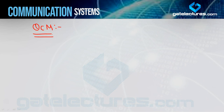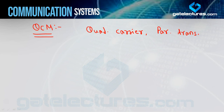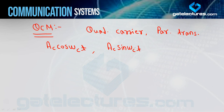So quadrature carrier multiplexing kya hoti hai? Basically yahan par aap quadrature carrier ka use karte hain, aur parallel transmission karte hain — ek se zyada message signals transmit karte hain. Quadrature carrier ka meaning hota hai: suppose karo ek carrier use kar rahe hain AC·cos(ωct), to jo second carrier hoga wo ho jayega AC·sin(ωct). Means dono ke beech mein 90 degree ka phase shift hoga. Basically aap quadrature carrier ka use karte hain in the case of quadrature carrier multiplexing, aur iske through aap do message signals ko transmit karte hain through a single channel.